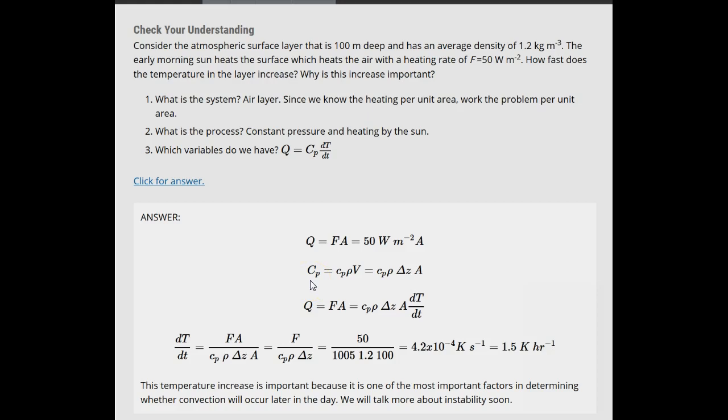The heat capacity then depends on the specific heat capacity at constant pressure Cp, but it also depends on the air parcel's mass, which is density times volume.